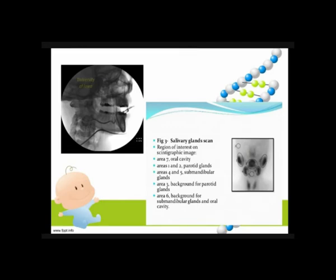On the scintigraphy image, areas 1 and 2 are the parotid glands, areas 4 and 5 are the submandibular glands, number 3 is the parotid gland background, number 6 is the background for submandibular glands and oral cavity, and number 7 is the oral cavity of our patient.